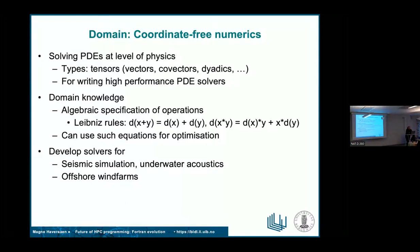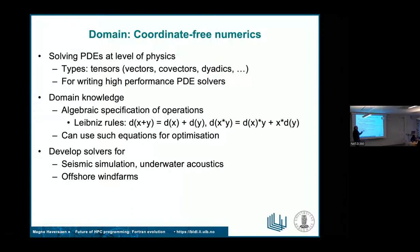The next step is integrated domain knowledge, like this property called the Leibniz Rules, which says how differentiation — the D operation — acts with respect to the ring operation summation: it distributes. And for the ring operation multiplication, it distributes according to a specific rule. So there are various axioms that hold for these tensors, and you can use them as optimization routes where appropriate. Aim for writing your code as clearly as possible, and then have automated tools come in and do the transformations.